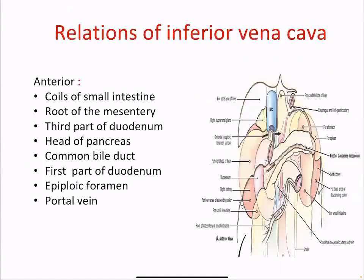Relations of the IVC — anterior relations, from below upward: coils of the small intestine, root of the mesentery, third part of the duodenum, head of the pancreas, common bile duct, first part of the duodenum, epiploic foramen, and the portal vein.